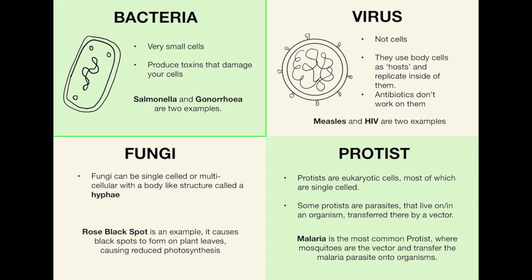Third we have fungi. Fungi and protist don't necessarily need a diagram at GCSE level. Fungi can be single-celled or multicellular with a body-like structure called a hyphae — that's more relevant if you're aiming for the higher level, so foundation students don't worry too much about that name. Rose black spot is a very good example of a fungal disease; it causes black spots to form on plant leaves which reduces the photosynthesis that can happen.